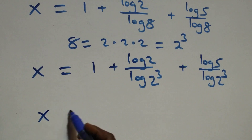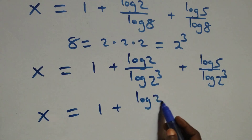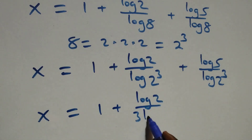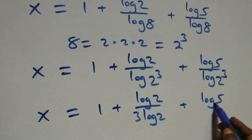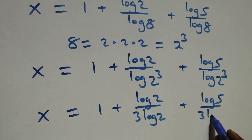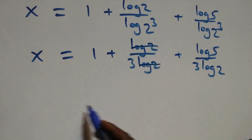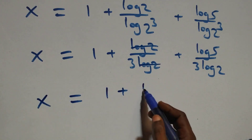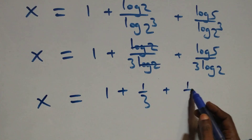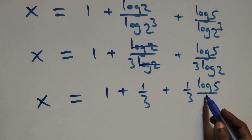We have x = 1 + log2/(3·log2) + log5/(3·log2). Here log2 cancels each other giving 1/3, which implies x = 1 + 1/3 + (1/3)·(log5/log2).